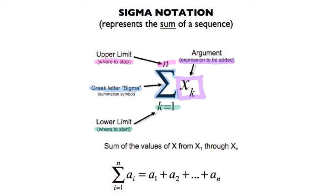To understand this more, we will take a look at some examples. Whenever we see the letter K, we are going to plug in a number — like evaluating expressions. So we are going to evaluate the argument starting with the lower limit number, and go through all of the numbers until we get to N, whatever number our sigma notation tells us to stop with.